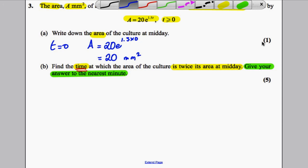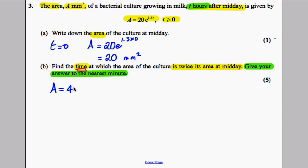So if it starts off at 20, when it's double it would be 40. So we're trying to solve, we are letting A be 40 now, that's when it's double, and we are trying to find t. So we substitute this into the formula here, and we're solving 40 is equal to 20e to the 1.5t.